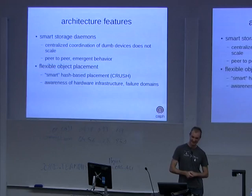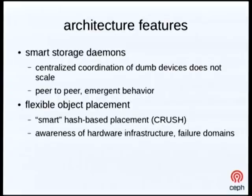The other key feature is that Ceph is built around a flexible placement algorithm called CRUSH. The basic idea is that the system has some awareness of the hardware infrastructure across which it's deployed — disks and hosts, hosts and racks, racks and rows. There's a hash algorithm smart enough to distribute your data across that infrastructure based on basic policies. You might say you want three replicas of every object, but you want them separated across racks or maybe across data centers. The system uses a hash placement algorithm that avoids a metadata server.